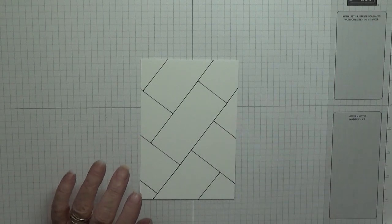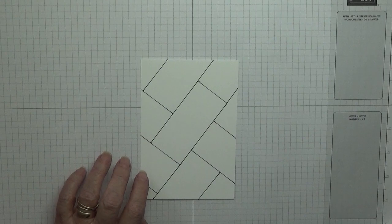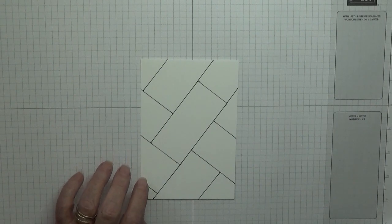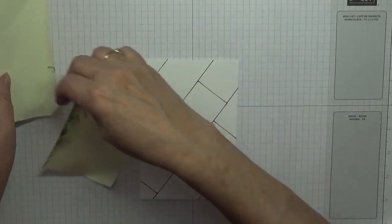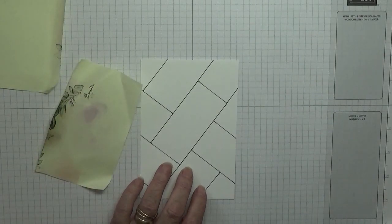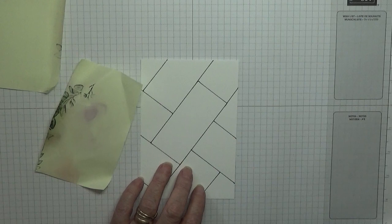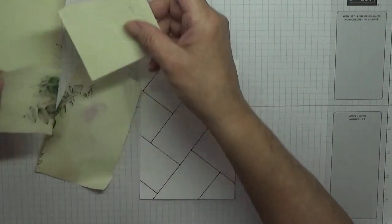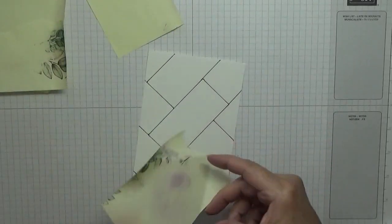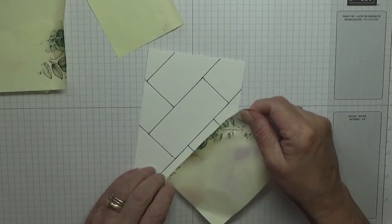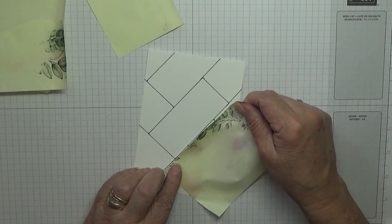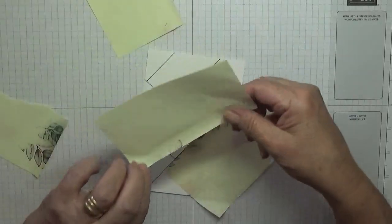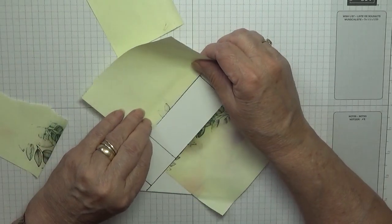You need some post-it notes, and I did keep my post-it notes from last time. There they are. So we'll start off with the center one, and all we're doing is masking around each one.